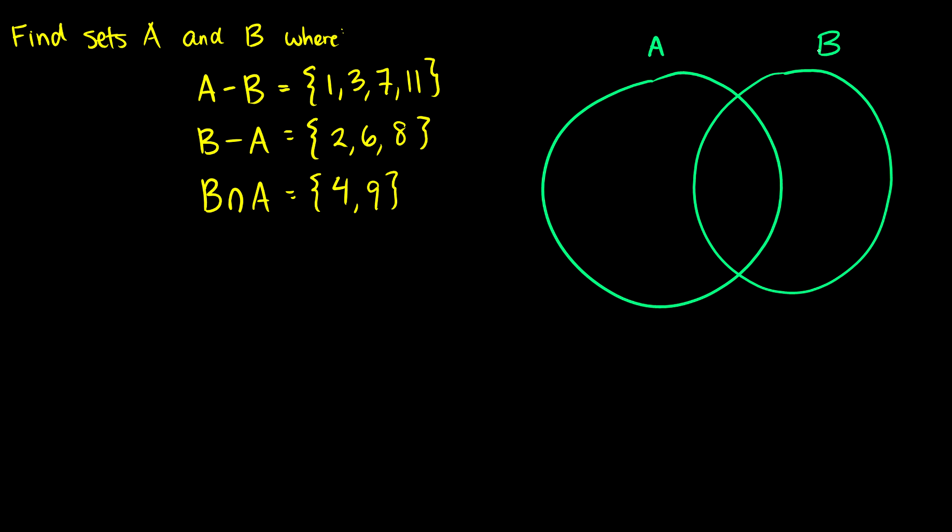So first of all, we know our intersection is going to contain 4 and 9. So we can put 4 and 9 in there. B minus A is going to be 2, 6, and 8. So we know 2, 6, and 8 are going to lie in this area over here. And for A minus B, we have 1, 3, 7, 11. So we know that 1, 3, 7, and 11 are going to be in this space here. So we can see our sets here.